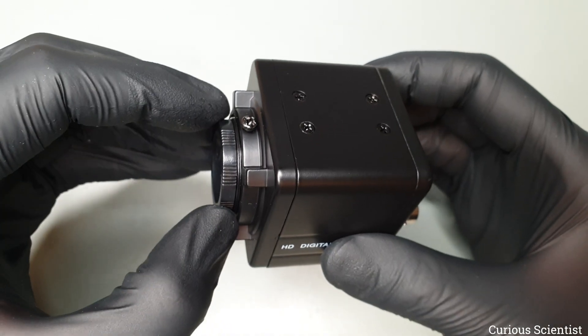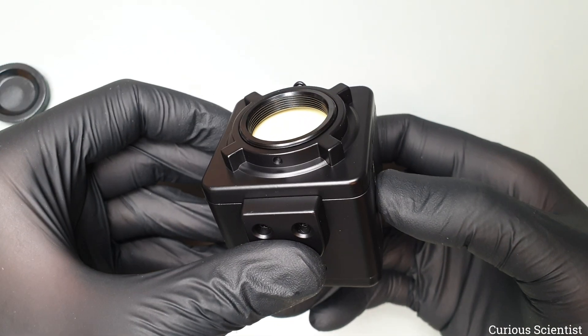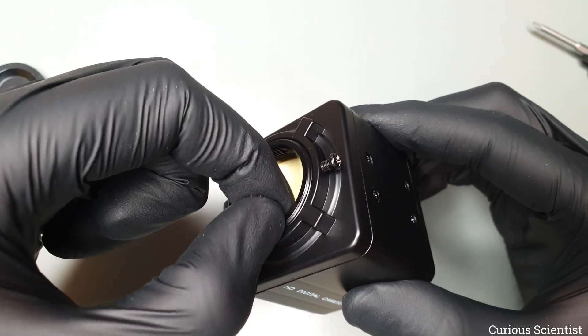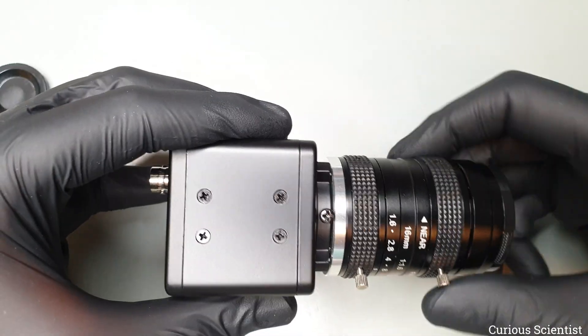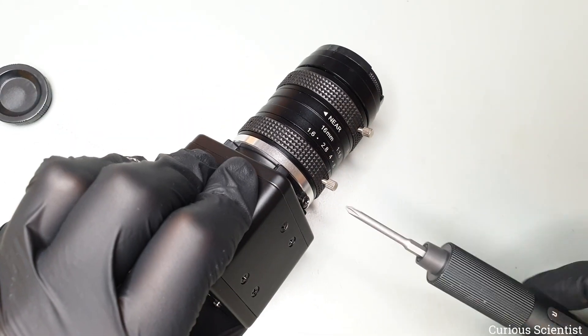So I went to Aliexpress and I managed to find some nice metal enclosures for CCTV cameras with C mount flange. The enclosure I found was especially interesting, because the threaded ring was rotatable, so I could always ensure that the aperture and focusing distance on the lens are pointing upwards so I can see them.